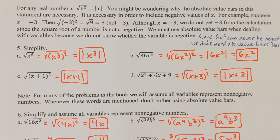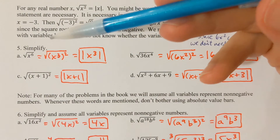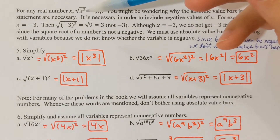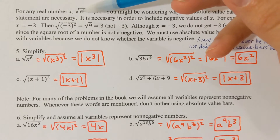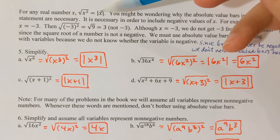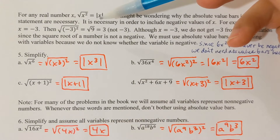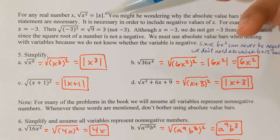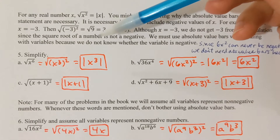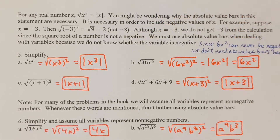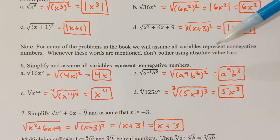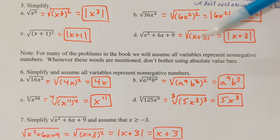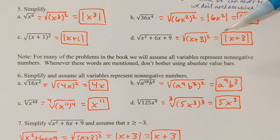If in the problems they just say simplify and you're working with a variable, pay attention to the fact that the square root of something squared is going to be that something — whatever it is, x. But we can't ever have a negative coming out of the square root calculation. Like if I ask you the square root of 9, that is not negative 3 — that's positive 3. For many of the problems in the book, we're going to assume that all the variables represent non-negative numbers, and whenever those words are mentioned, you don't have to bother with absolute value bars in the answer.